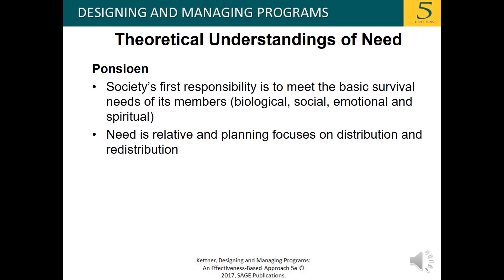Looking at Poncian's theoretical understanding of need, the whole idea is that society's first responsibility is to meet the basic survival needs of its members — biological, social, emotional, and spiritual. Need is relative, and planning focuses on distribution and redistribution.